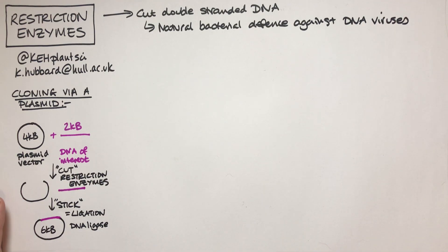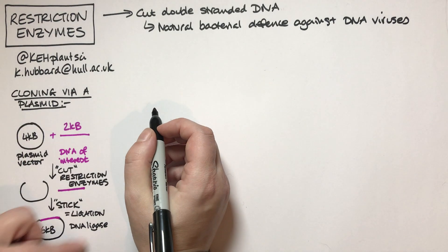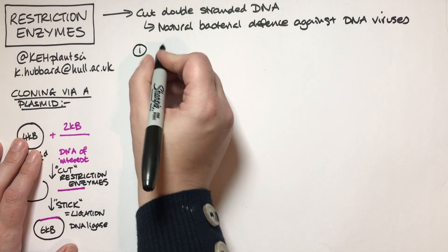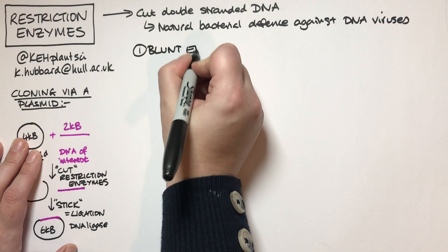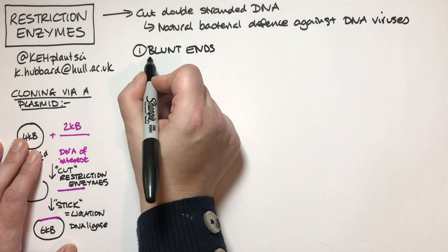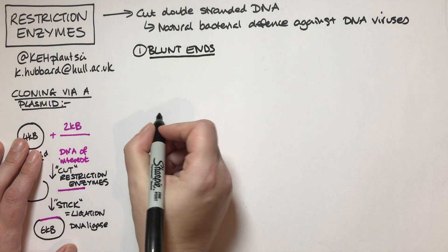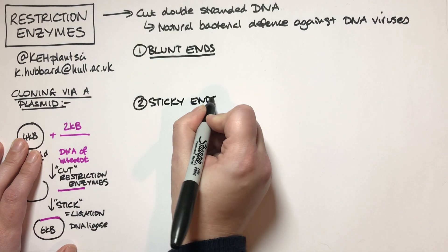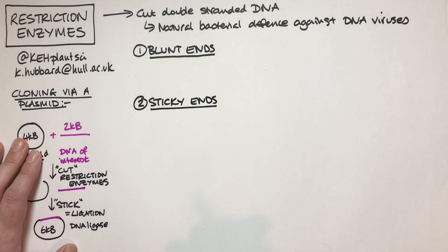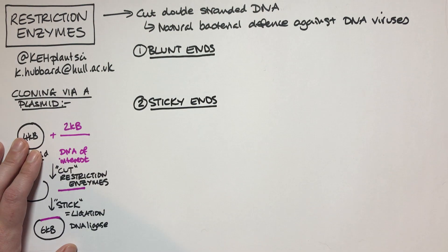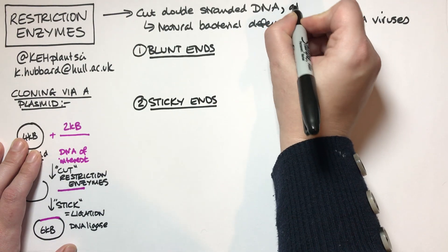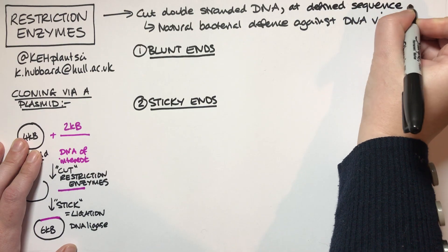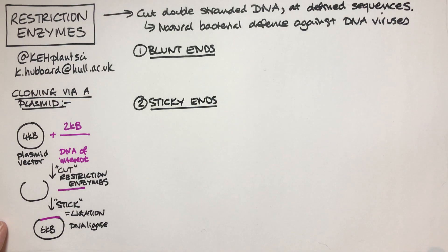There are two different types of cuts that have slightly different uses when we think about cloning. There are two broad classes of restriction enzymes: ones that make what we call blunt ends, and ones that make what we call sticky ends. The other important thing about restriction enzymes is they don't cut DNA randomly — they cut at defined sequences, so they are sequence specific, which makes them really useful in the lab.